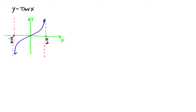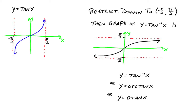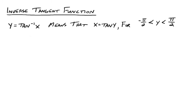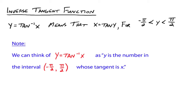Let's do tangent. There's the graph of tangent — we've got asymptotes. Restricting the domain to between negative pi over 2 and pi over 2, then switching the x and y ordered pairs around, your asymptotes switch to become horizontal asymptotes, and the graph looks like the following. The notation is tangent to the negative 1 of x, which is the arc tangent or inverse tangent of x. Depending on your book and instructor, the most common notations are arc tangent of x or a tangent of x.